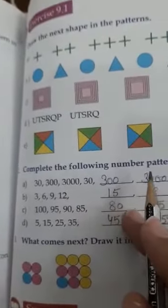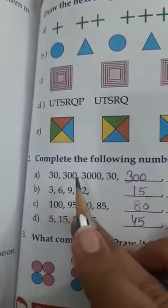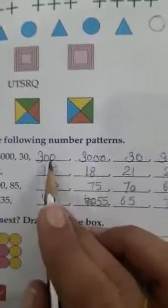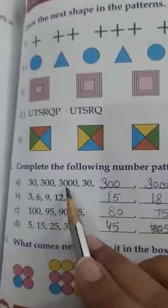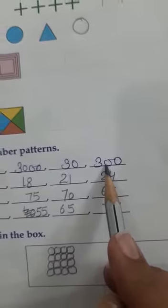Now see second part. Complete the following number patterns. First sum, 30, then 300, 3000, then 30. 30 after given 300, so write there 300. 300 after given 3000, write there 3000. 3000 after 30, so write there 30. 30 after given 300, so write there 300. Clear students.